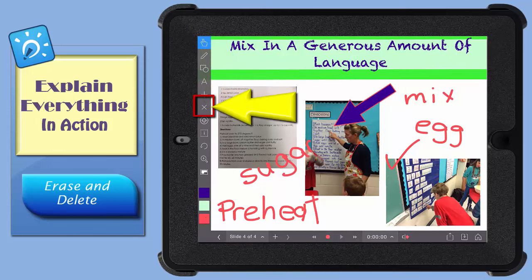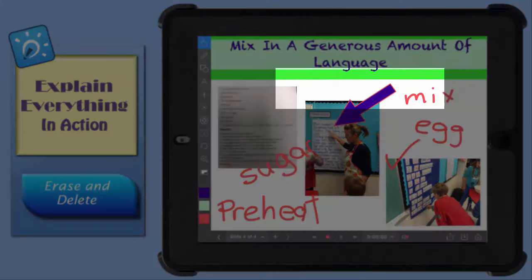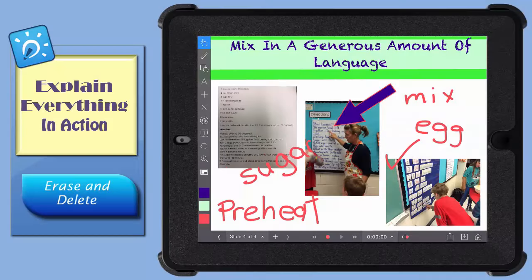The Delete tool can be used to remove objects such as text boxes, shapes, photos, and drawings from your project.